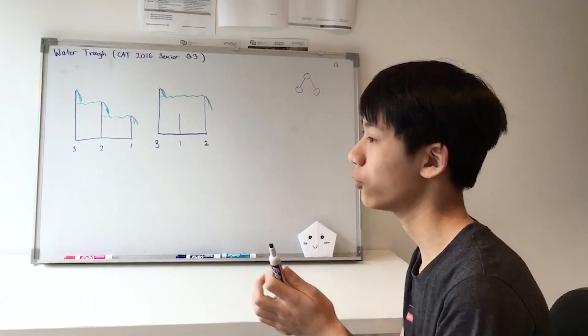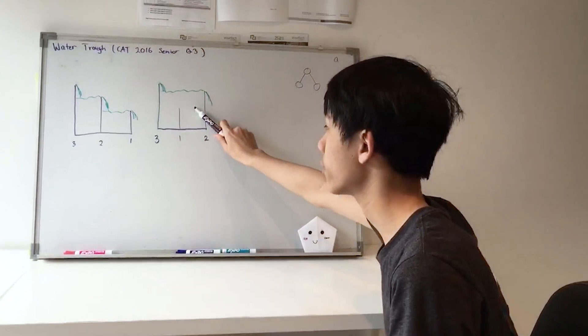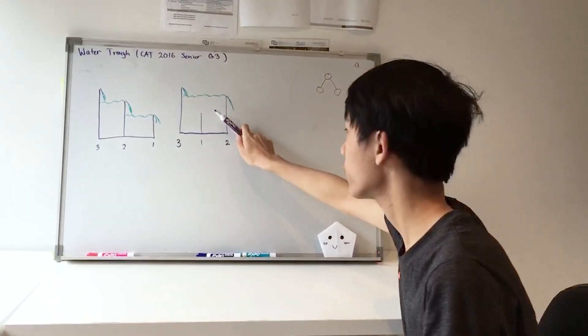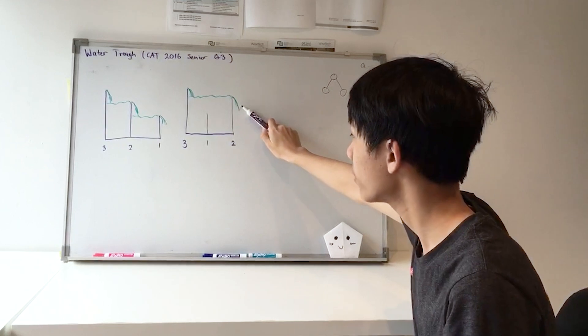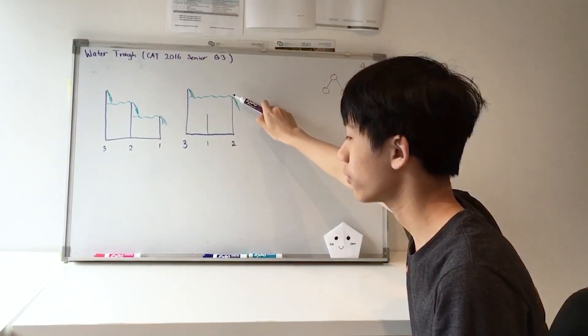In this problem, a water trough has baffles that turn it into a series of chambers. Water runs from the left end to the right end and it backs up if the height of the next baffle is higher.